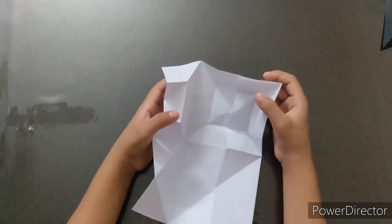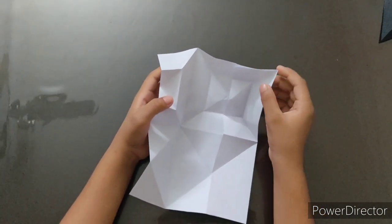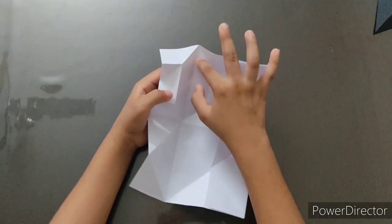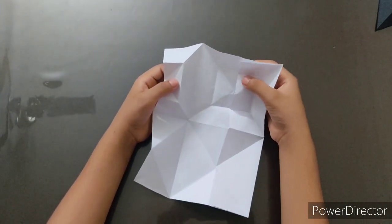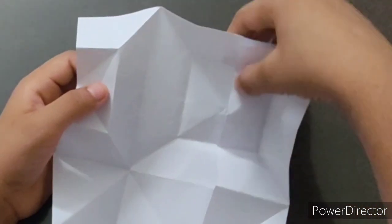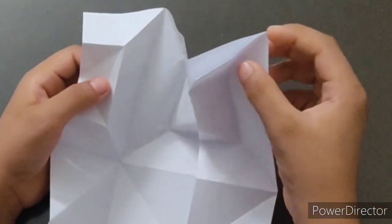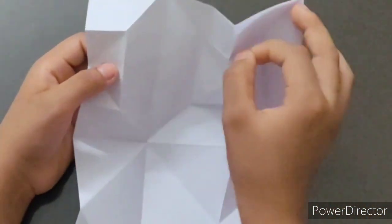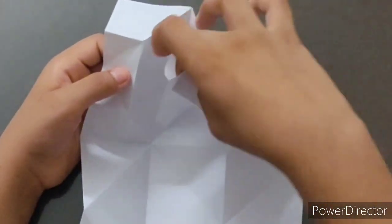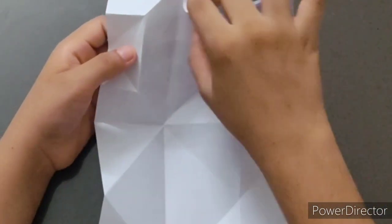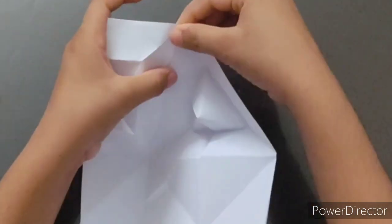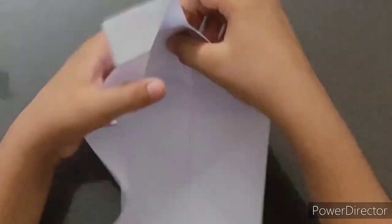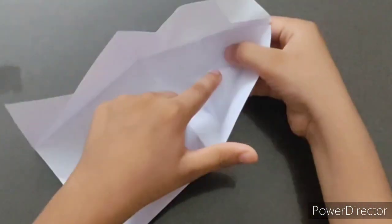This is slightly a complicated part. Now, you have to bring this edge till here like this. So, for that, just fold this till here using this line. Then, it will form a 3D triangular shape over here.